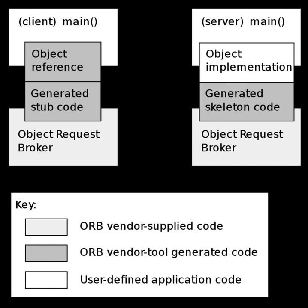CORBA provides flexible data typing, including an 'any' data type. CORBA also enforces tightly coupled data typing, reducing human errors. In a situation where name-value pairs are passed around, it is conceivable that a server provides a number where a string was expected. CORBA's interface definition language provides the mechanism to ensure that user code conforms to method names, return and parameter types, and exceptions.